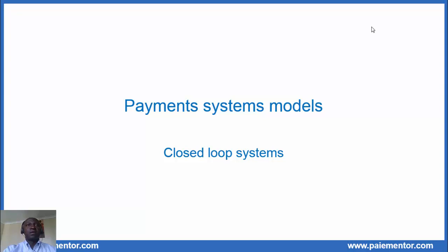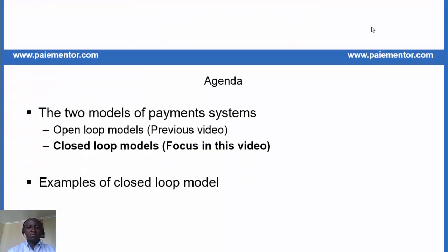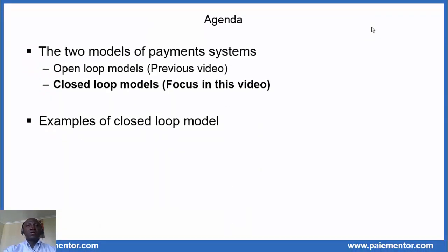Hi, my name is John Paul and I run the blog Paymentor.com. In this video we will continue our analysis of payment systems models. The focus will be on closed loop models. Open loop models were introduced in the previous video and I encourage you to watch it to easily understand what we are going to see in this one and connect the dots. In this video we will look at closed loop models and consider a few examples to illustrate what they are.